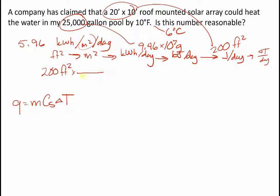200 square feet, and it's not roughly, it's 10.76 square feet per one square meter. And then in this equation, we have the 5.96 kilowatt hours per meter squared per day. So my meters square cancel, my feet square cancel.